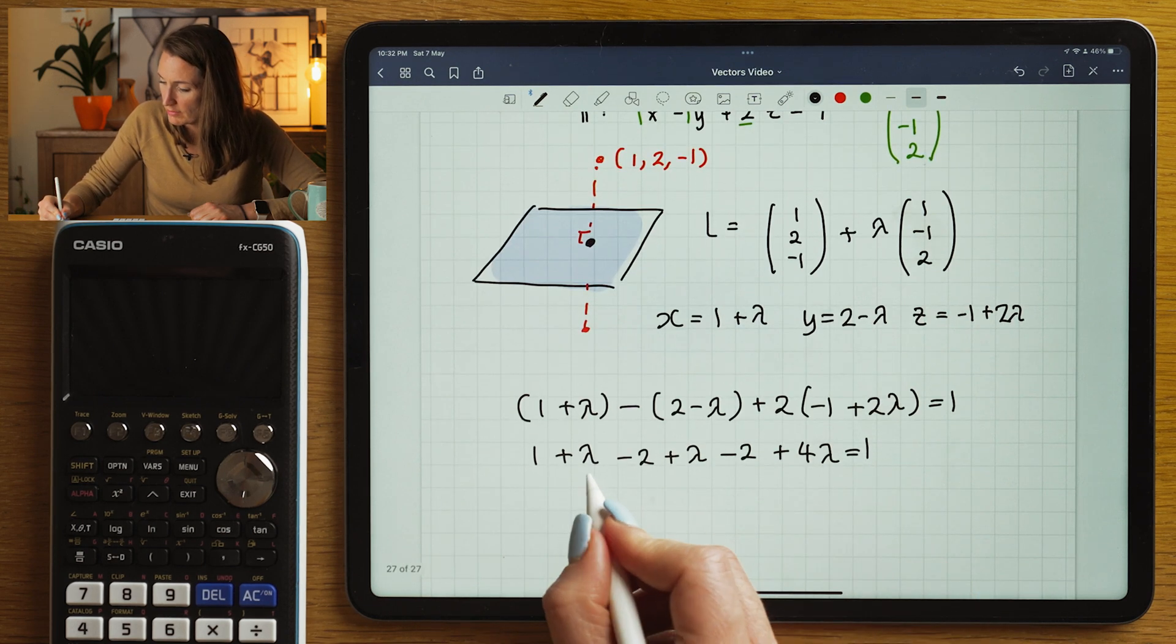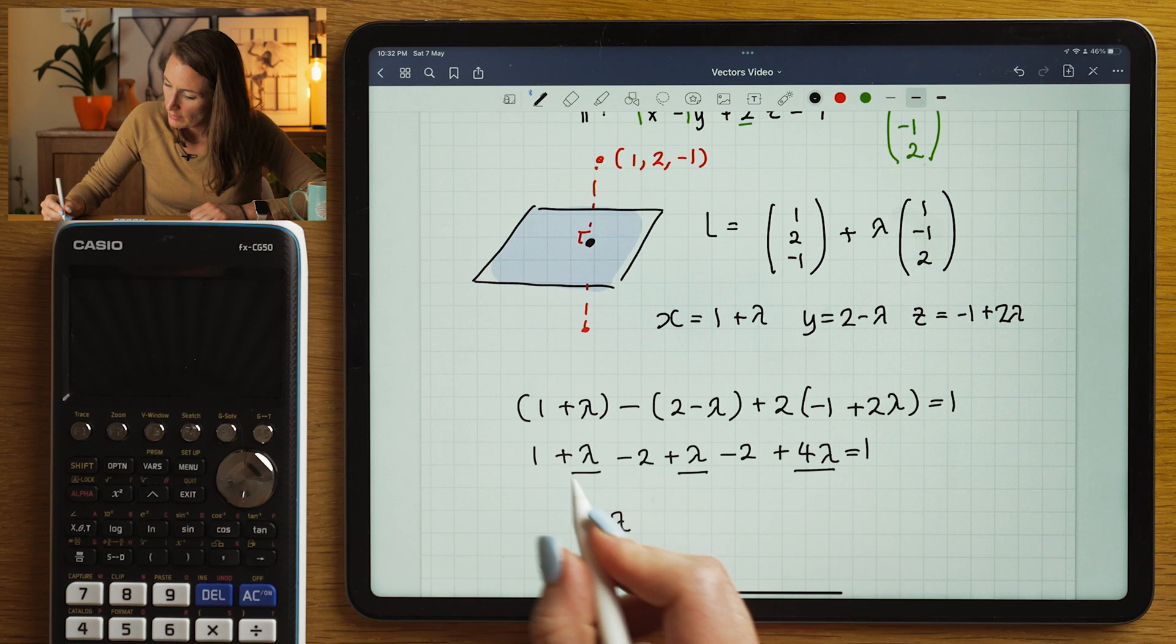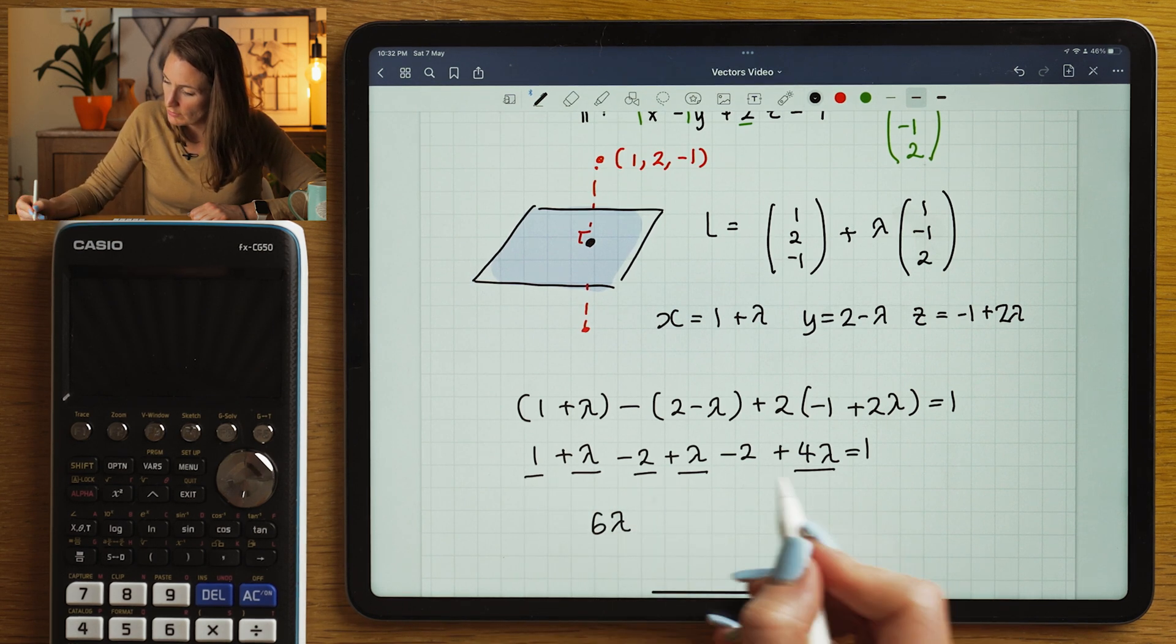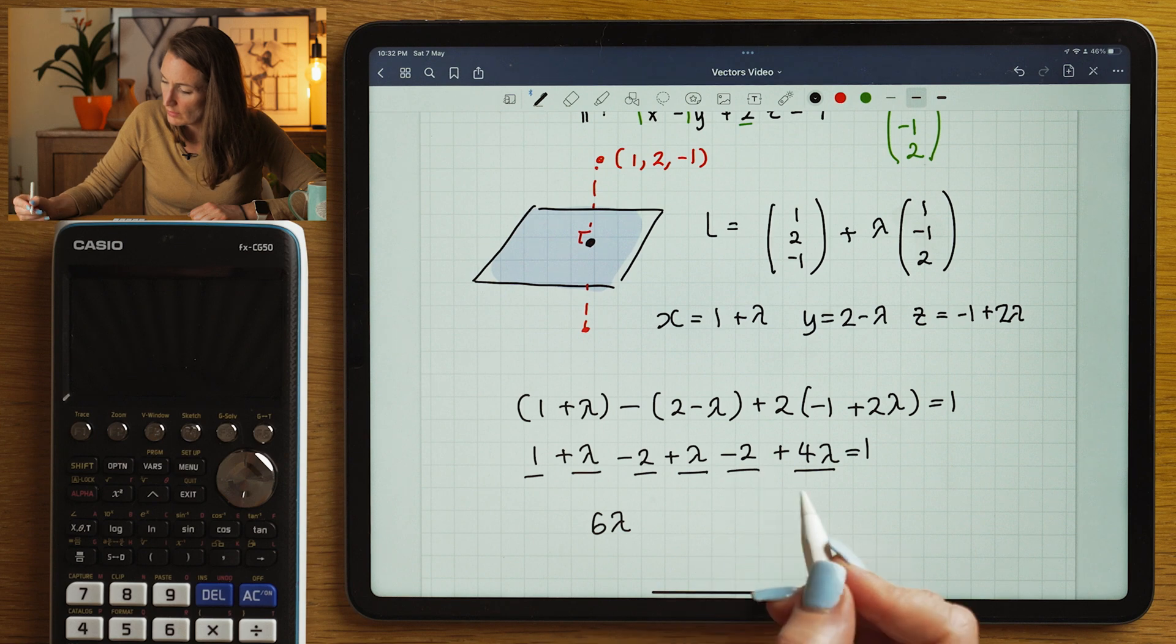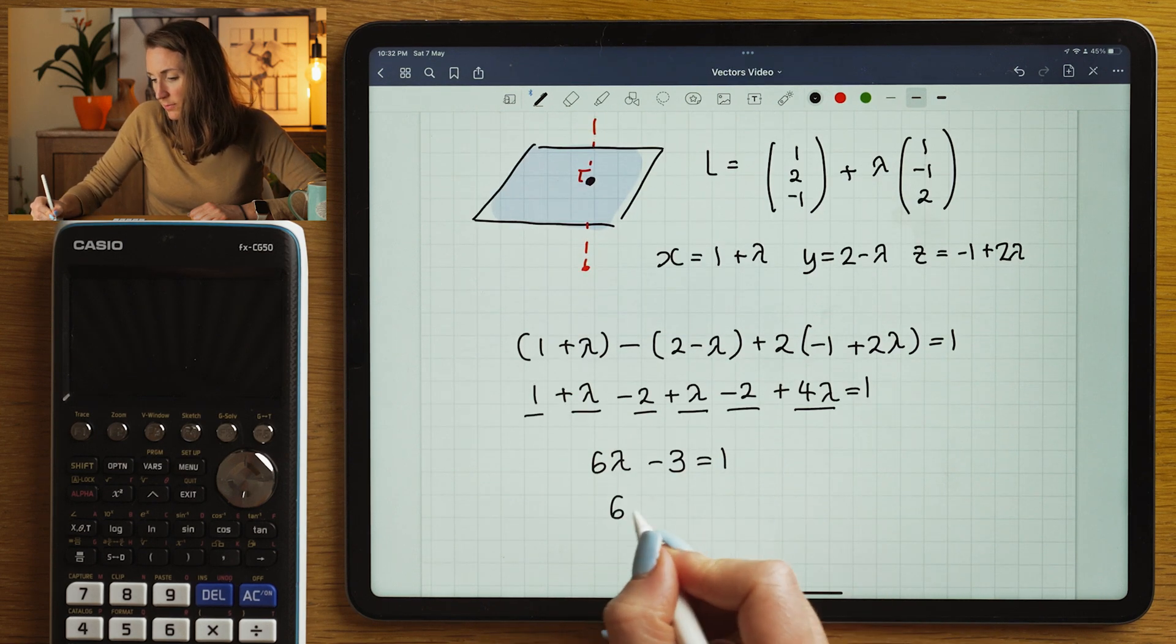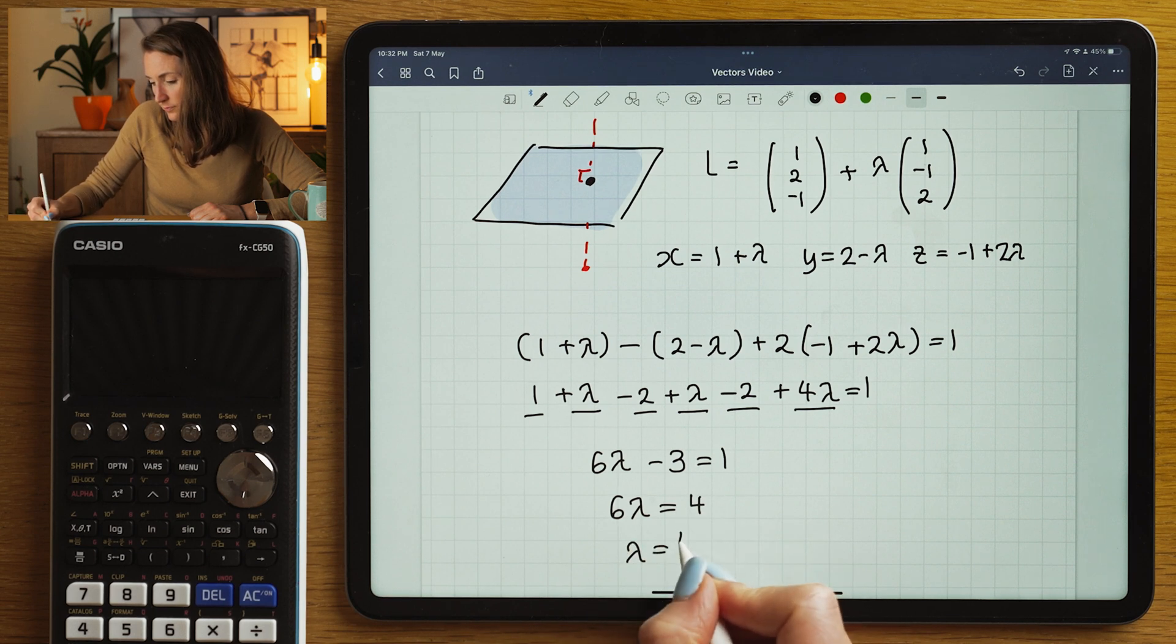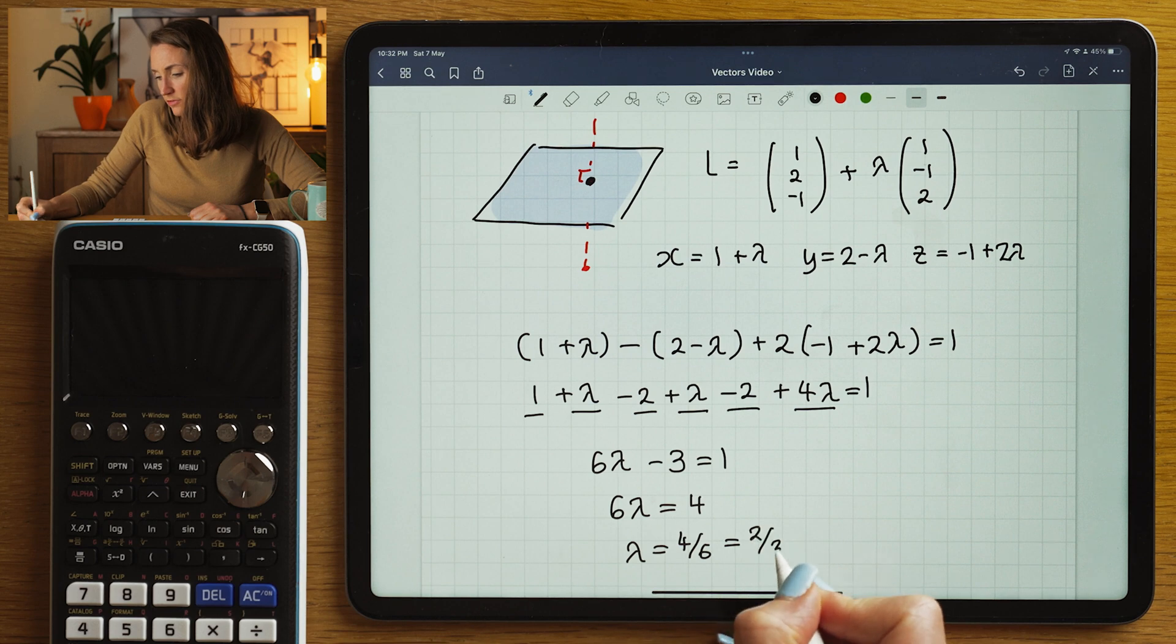I'm going to collect up all my lambdas. I've got one lambda, two lambda, six lambda. One take away two is minus one, take away another two minus three. I'm going to solve this for lambda and simplify that down in fraction.